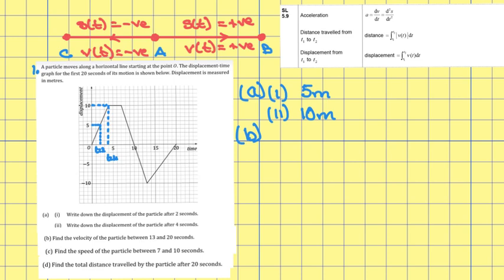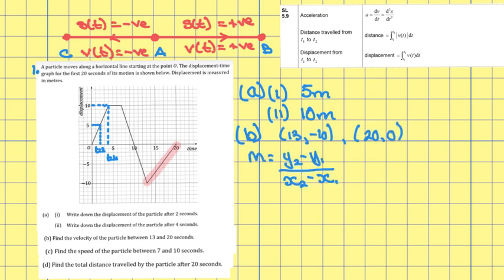Part b: find the velocity of the particle between 13 and 20 seconds, so I want the gradient of this line. Between 13 seconds and 20 seconds, those are the points (13, −10) and (20, 0). The gradient m of any line is equal to y2 minus y1 over x2 minus x1, which can be found in the formula booklet. That gives me 0 minus (−10) over 20 minus 13, which is equal to 10 over 7 meters per second.